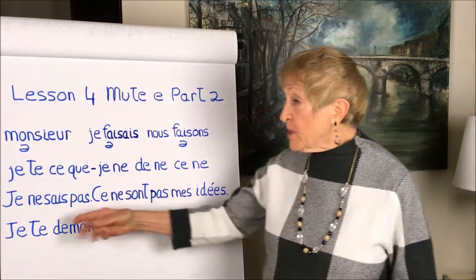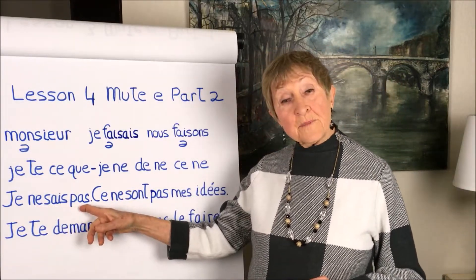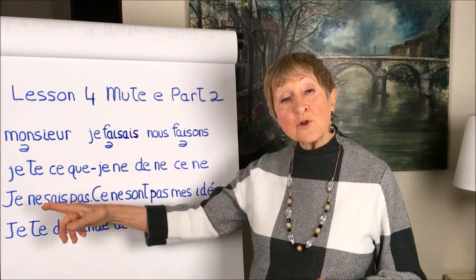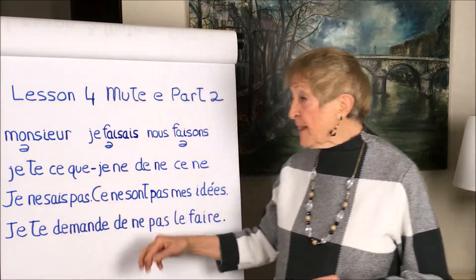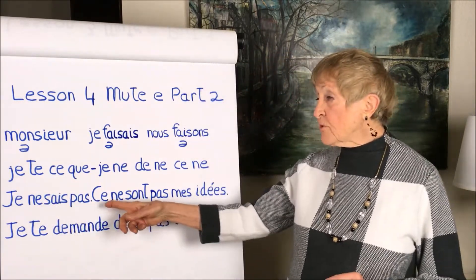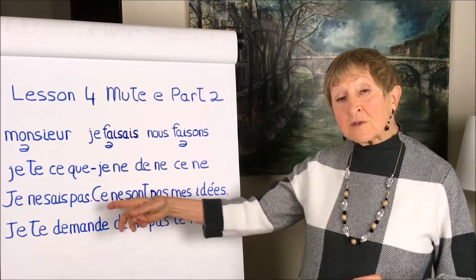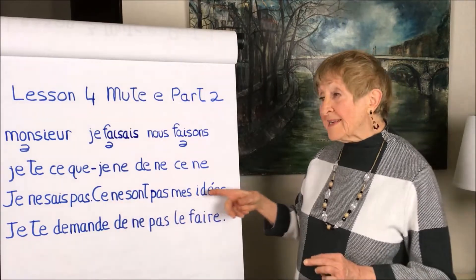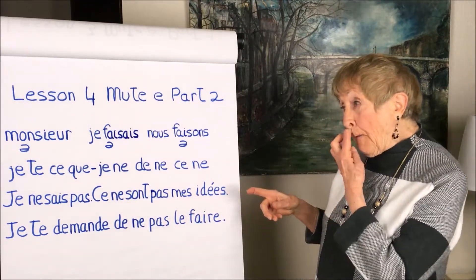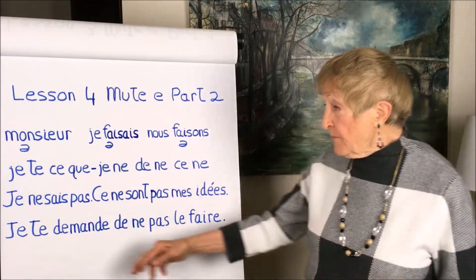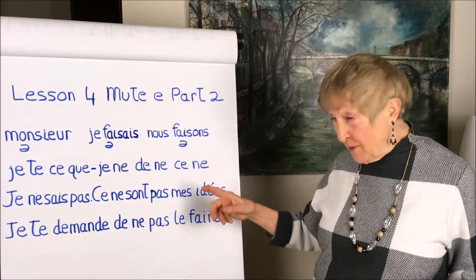So for example, here we have 'je ne sais pas' — pronounced 'jeûne.' And here we have 'ce ne sais pas les idées,' pronounced with 'sq.' These fixed forms are always going to be said like that.